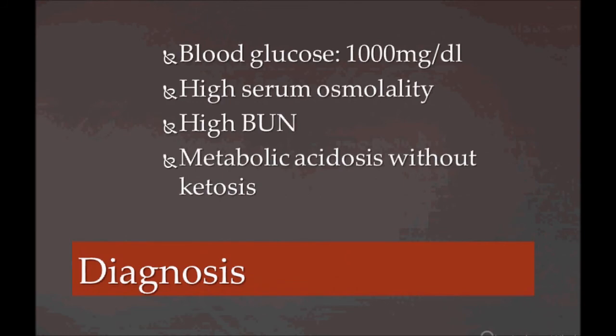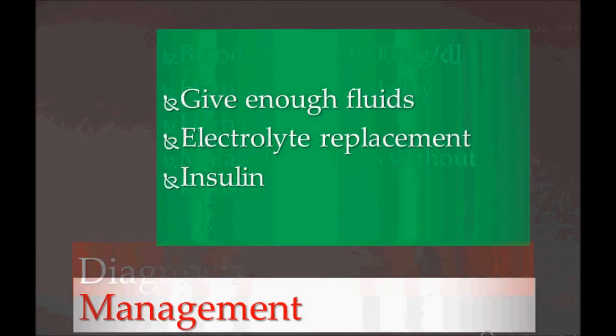The lab findings to look for: blood glucose level will be nearly 1000 mg/dL — very high. High serum osmolality due to dehydration. Elevated BUN. And metabolic acidosis without ketosis — this is a very important point to remember.